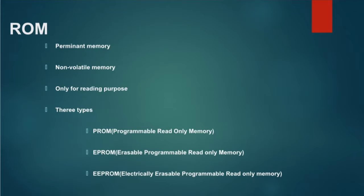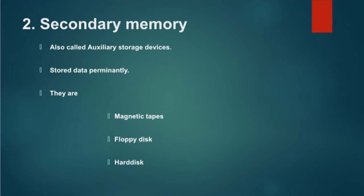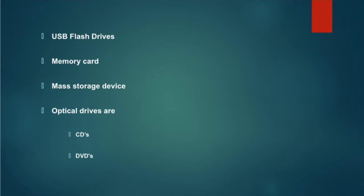Secondary storage devices are also called auxiliary storage devices. These memories are used to store data permanently, and they hold data even when the computer is switched off. These memories are cheaper and have higher storage capacity than primary memory. Various types of secondary storage devices include magnetic tape, floppy disk, hard disk, optical devices, USB flash drives, memory cards, and mass storage devices.